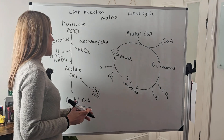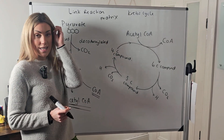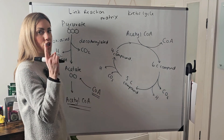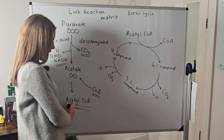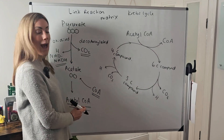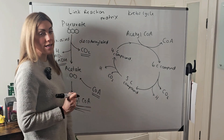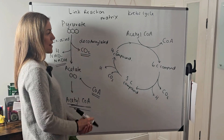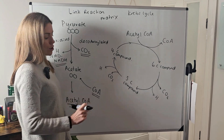The link reaction is really simple — it's all about getting acetyl coenzyme A which can then feed into stage three, the Krebs cycle. Per link reaction we've made one CO2, one NADH, and one acetyl coenzyme A. But per molecule of glucose this happens twice, because in glycolysis per glucose we make two pyruvates. So per glucose the link reaction produces two CO2, two NADH, and two acetyl coenzyme A.